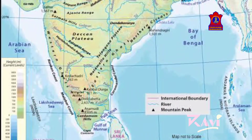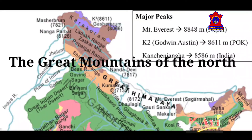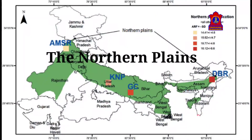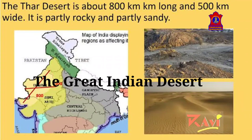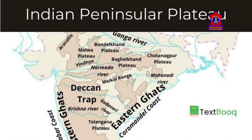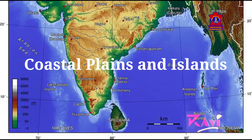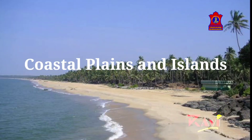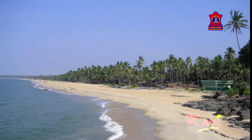These are the Great Indian Mountains of the North, the Northern Plains, the Great Indian Desert, the Peninsular Plateaus, and the Coastal Plains and Islands. We will be learning about all these five physical divisions in later chapters, as these are big topics and separate chapters are made on each topic.